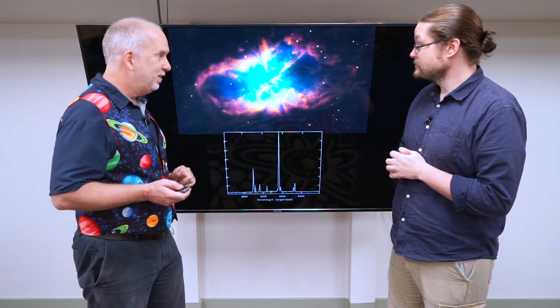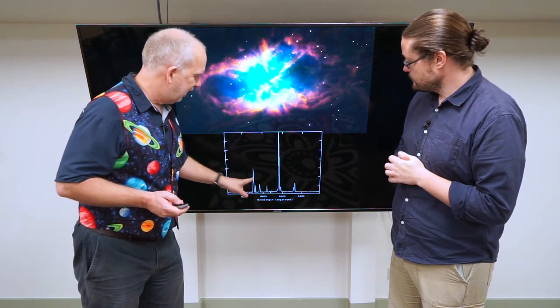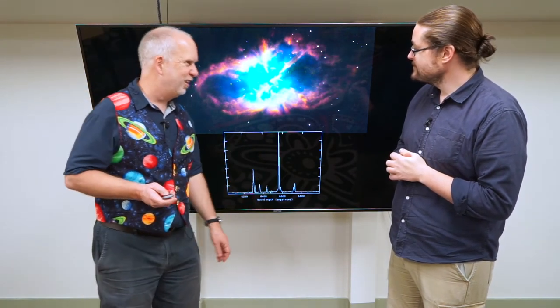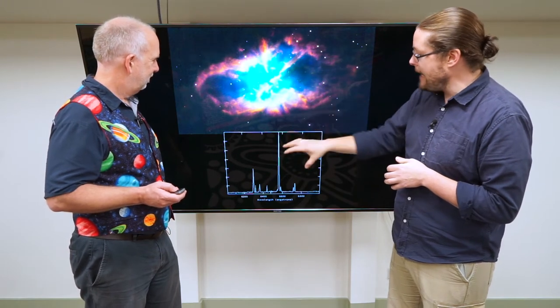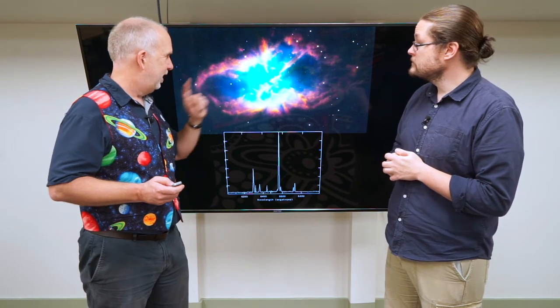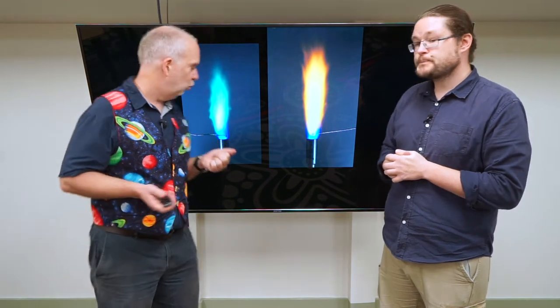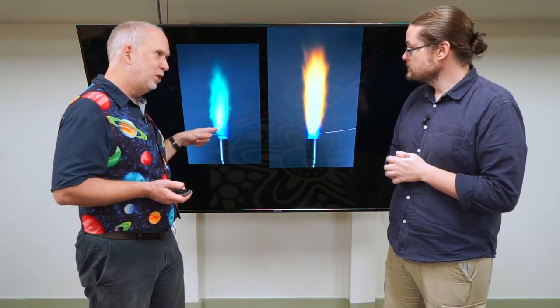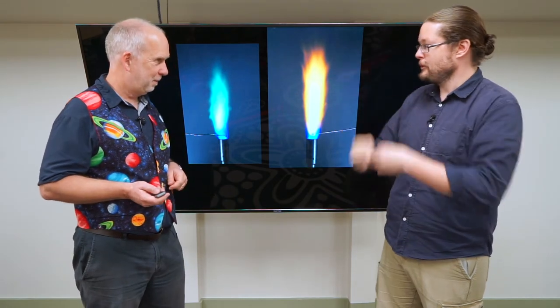You look at nebulae in space and they also have these emission lines. Here's a planetary nebula spectrum. You get spikes at particular wavelengths, nothing in between. Some of these different colors are from different gases present in the nebula. The blue is usually due to oxygen and the red is due to hydrogen. Different elements when you heat them up give different colors.